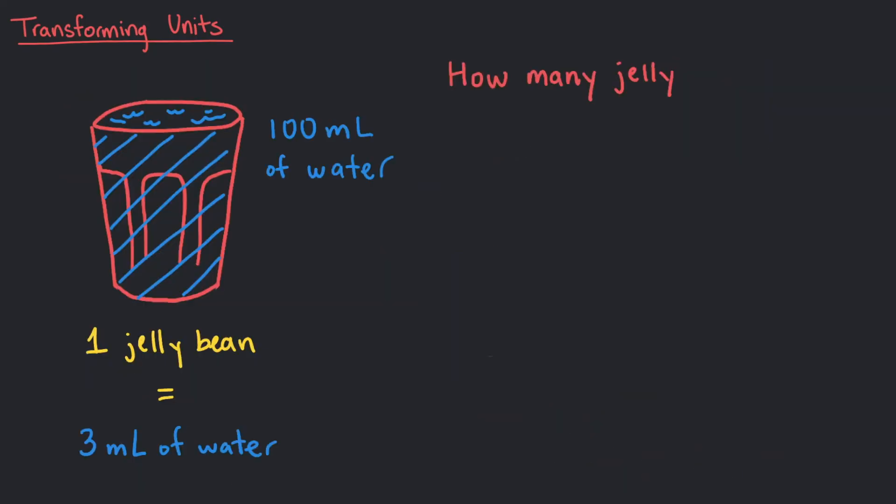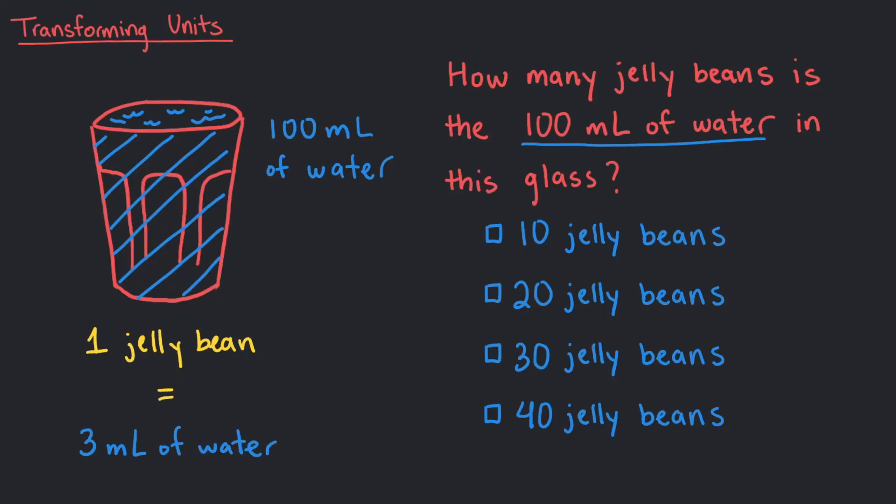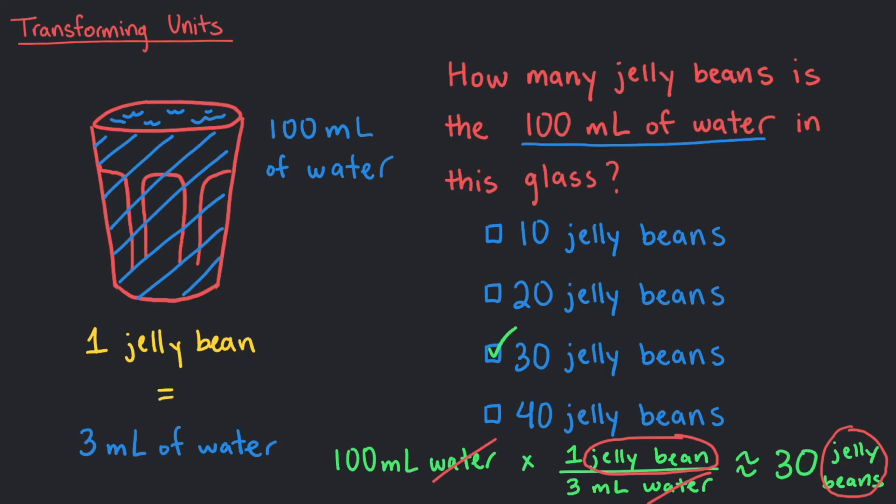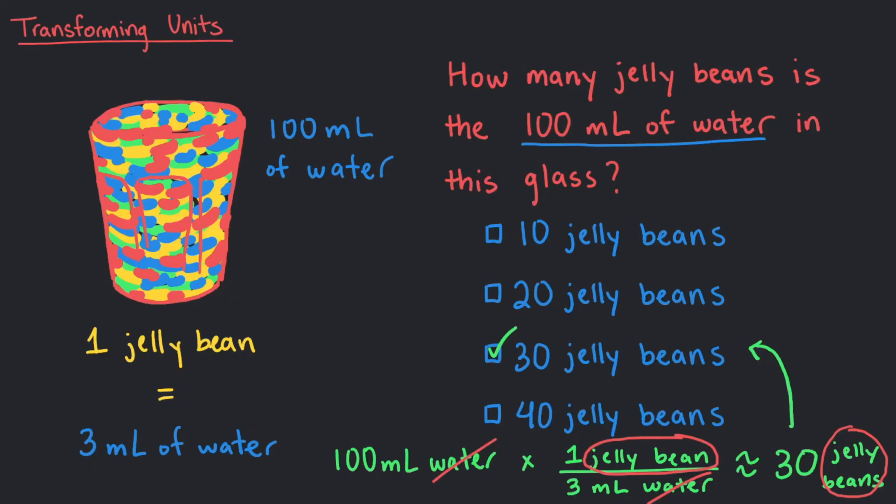For instance, how many jelly beans is the 100 milliliters of water in this glass? Exactly, it's about 30 jelly beans. The amount of space 100 milliliters of water takes up is equal to the space of 30 jelly beans.